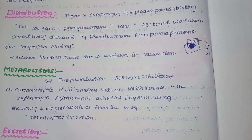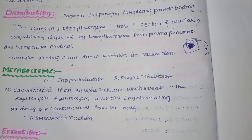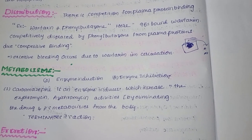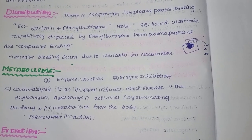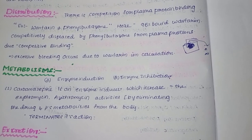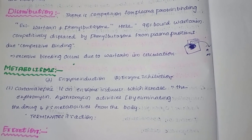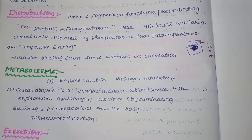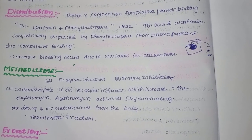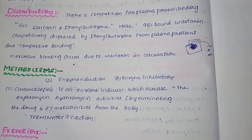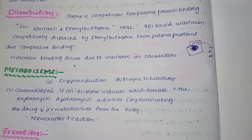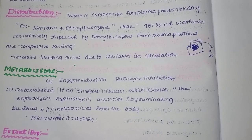There are two types of metabolic drug interactions: enzyme induction and enzyme inhibition. Enzyme induction increases the activity of metabolizing enzymes. Enzyme inhibition decreases enzyme activity, leading to reduced metabolism of co-administered drugs.